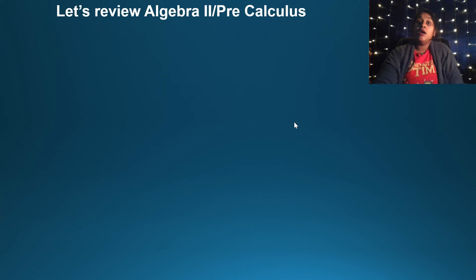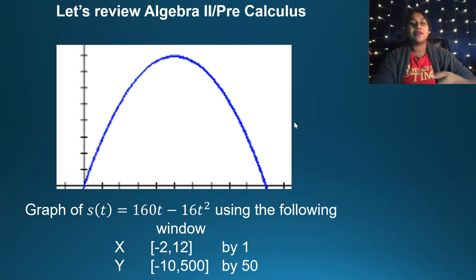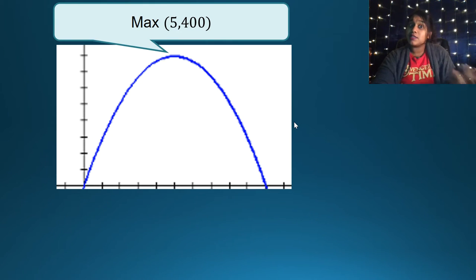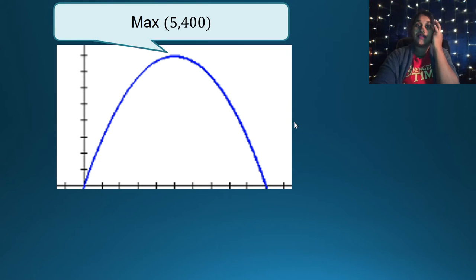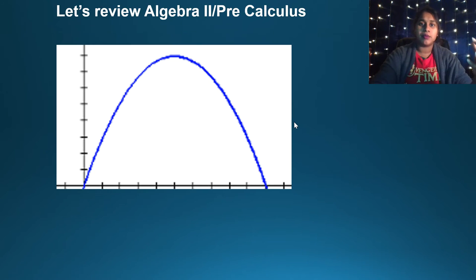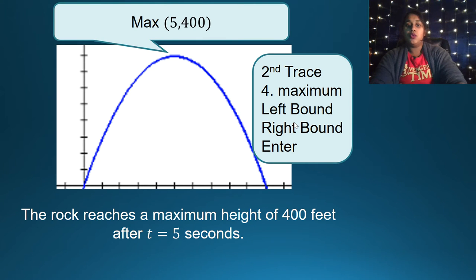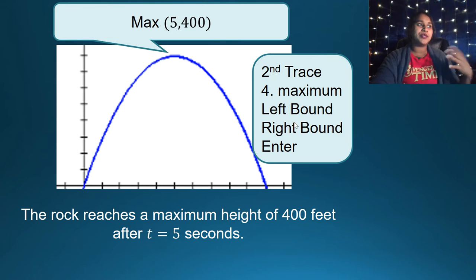How would we solve this with pre-calc? We might have graphed it and looked for the max point — what is the highest the rock will go? Using the graph with the given window, we can see that at T equals 5 seconds, the height is 400 feet. That's the pre-calc approach: find the max point visually.